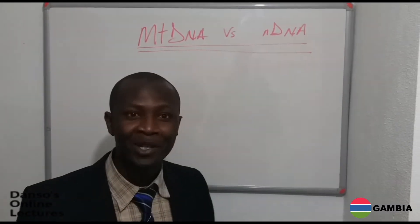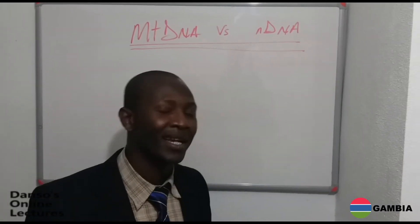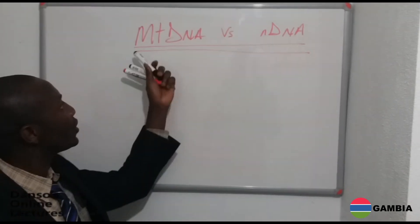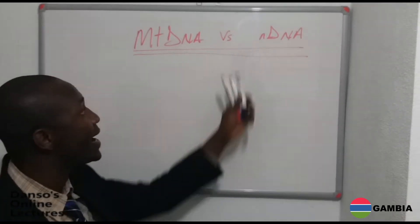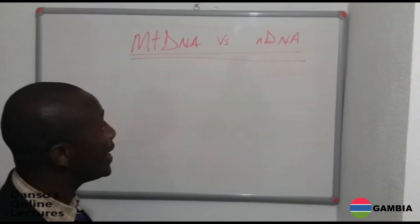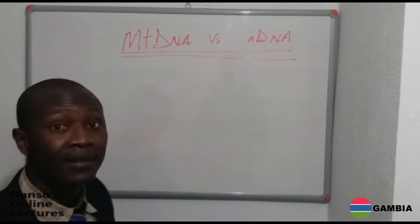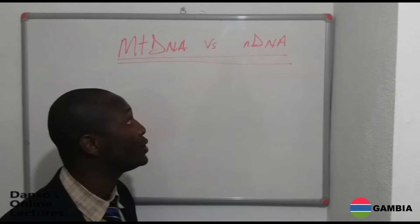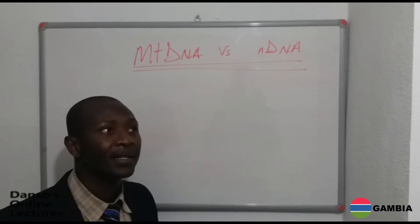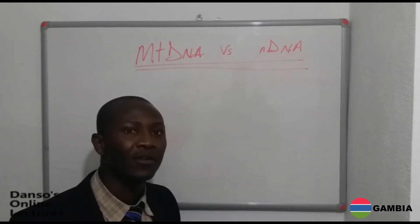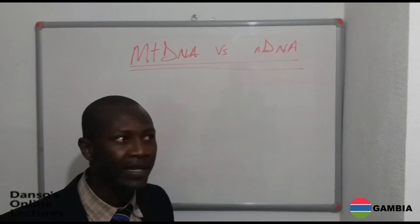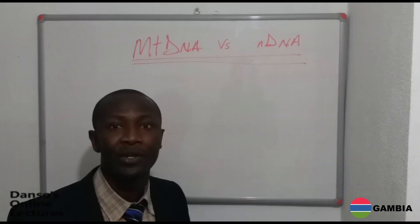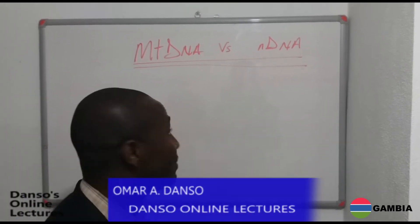Hello guys and welcome to another online lecture. Today we are going to discuss mitochondria DNA and nuclear DNA, since these are some of the molecular markers that people use in studying organisms at the level of species, family, and sub-family, depending on your area of specialization in molecular biology.